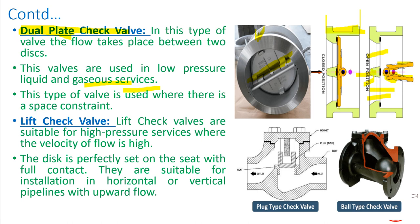Lift check valves are considered for steam, high-pressure, or high-velocity lines. There are two types: plug type and ball type. The fluid enters and lifts the plug vertically upward to allow flow. If a ball is used instead of a plug, it is called a ball type lift check valve. The disc is perfectly seated on the seat with full contact. They are suitable for installation in horizontal or vertical pipelines with upward flow.